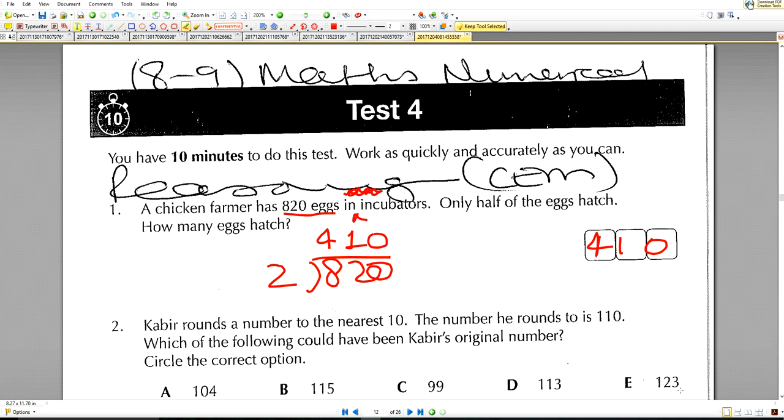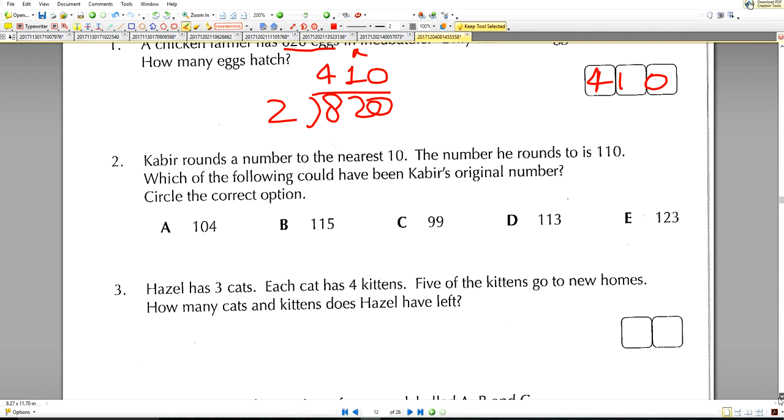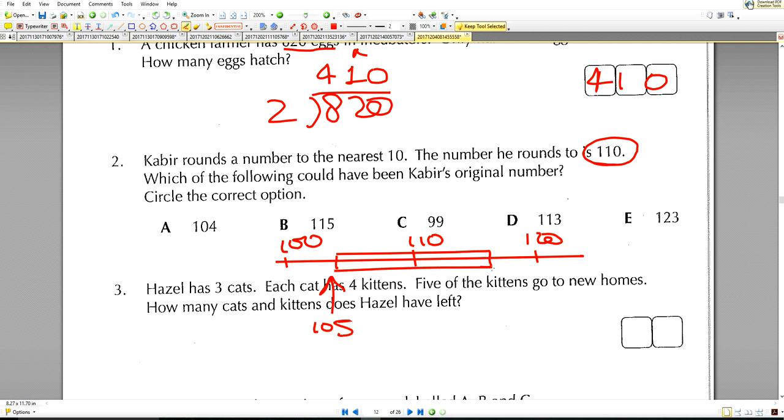Move on. Kabir rounds a number to the nearest 10. The number he rounds to is 110. Which of the following could have been Kabir's original number? So if you look at 110, that's 120 and there's 100. It's going to be in this region here, so anything from 105 all the way up to 115, but if we get to 115 that'll actually round up.